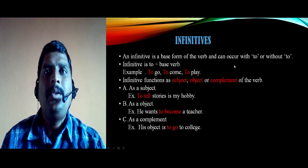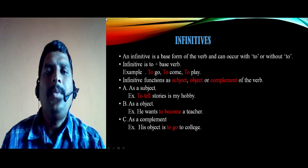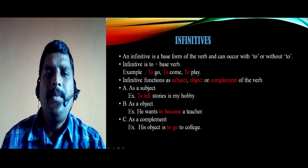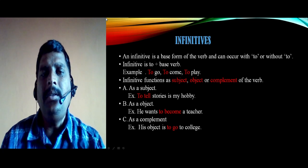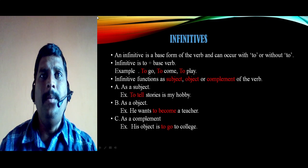For example: 'to go', 'to come', 'to play'. In the example 'to go', 'go' is the verb — when we add 'to' before 'go' it becomes 'to go', which is the infinitive. Similarly, 'come' is the base form; when we add 'to' before it, it becomes 'to come'. And 'play' is the base form; when we add 'to' before it, it becomes 'to play'. An infinitive functions as a subject, object, or complement of the verb.